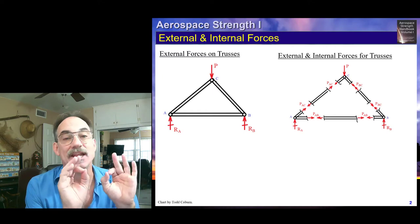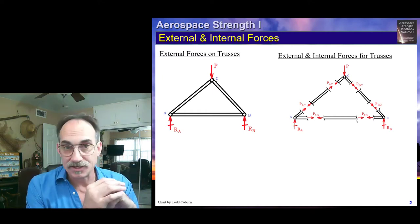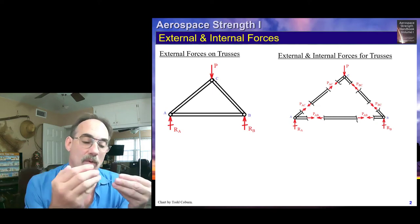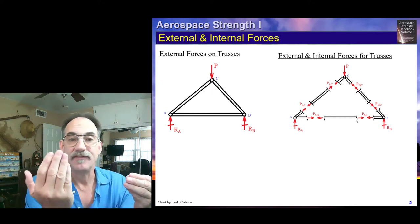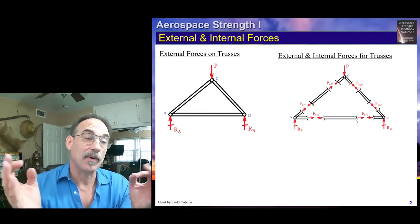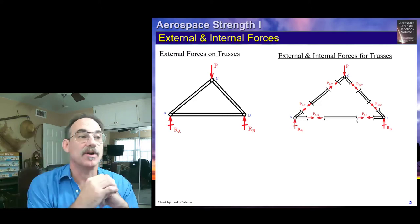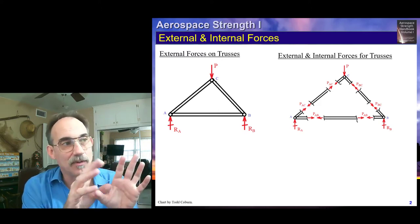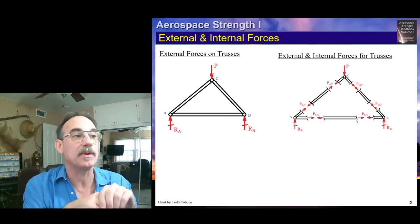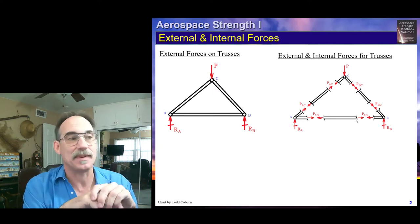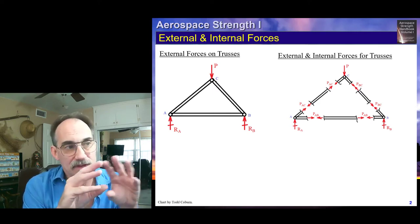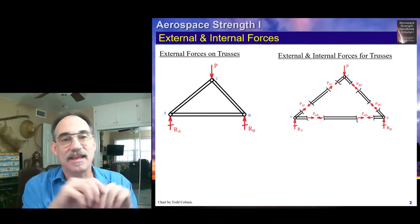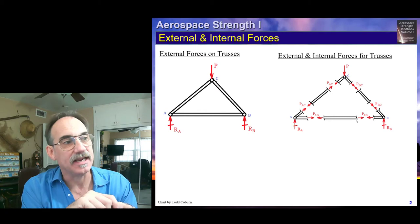We did the same thing at node C: we have the applied external force P and the two internal forces PAC and PBC. Each rod that has been split apart has the internal force acting on one side, and on the other side an equal and opposite force — a member in tension pulls on both ends, a member in compression pushes on both. If we actually solve this, we find PAC is compressive, as is PBC. The diagram shows external forces P, RA, and RB, and internal forces PAC, PBC, and PAB.